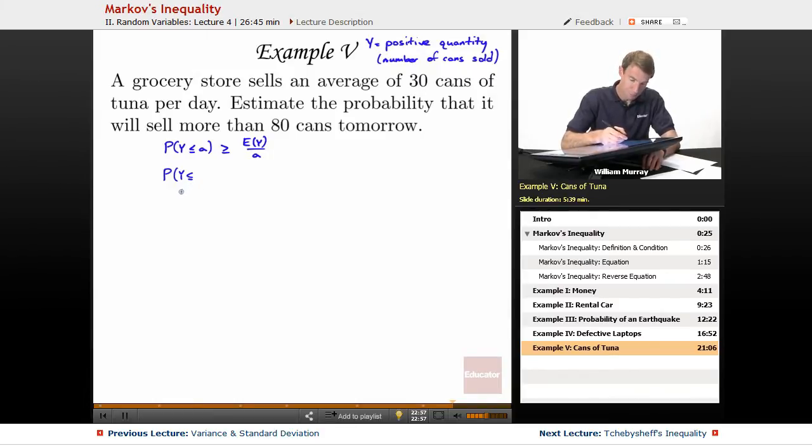Oops, I wrote down my Markov's inequality and I got them switched here. The probability that y is greater than or equal to a is less than or equal to E(y) over a, that's the original version of Markov's inequality. And the one that I was kind of channeling there was the opposite one, the probability that y is less than a is greater than or equal to 1 minus E(y) over a.